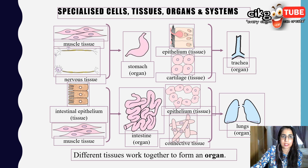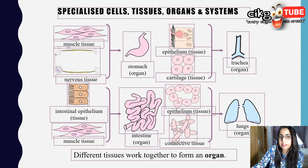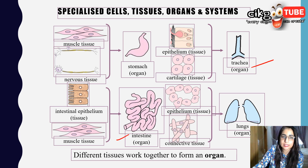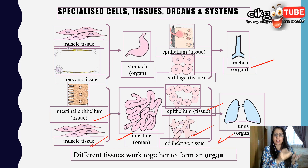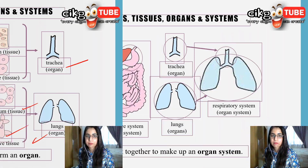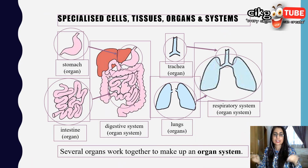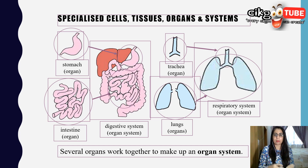Different tissues work together to form an organ. For example, muscle and nerve tissues form the stomach, which is an organ. Epithelium and cartilage tissues form the trachea, an organ in the respiratory system. The intestine is formed from epithelium and muscle tissues, and the lungs are formed from epithelium and connective tissue.